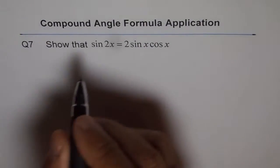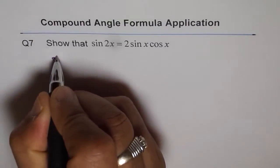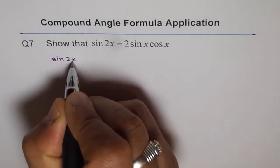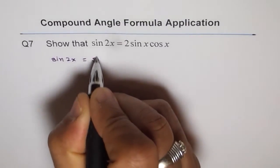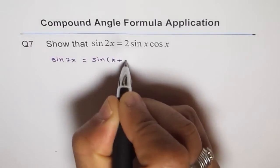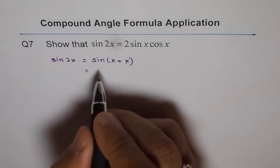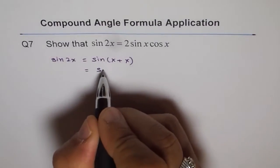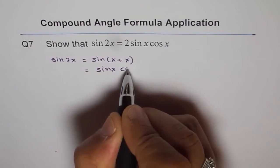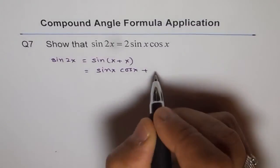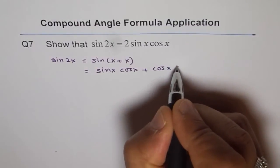So what we can do is, we can write sin 2x as equal to sin of x plus x, right? And then use the compound angle formula, which says sin x plus x is sin x cos x plus cos x sin x.